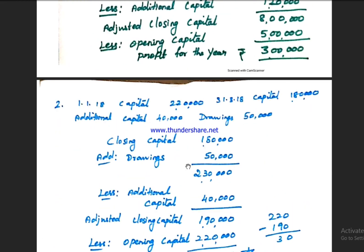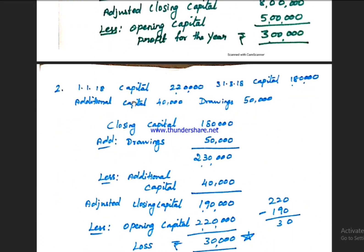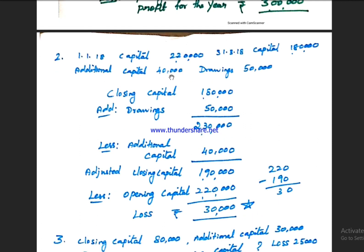Now the second exercise. As of 1st January, opening capital is 2,20,000. As of 31st, closing capital is 1,80,000. Additional capital is 40,000 and drawings is 50,000. Applying the format: closing capital 1,80,000, add drawings 50,000, less additional capital 40,000, less opening capital 2,20,000.